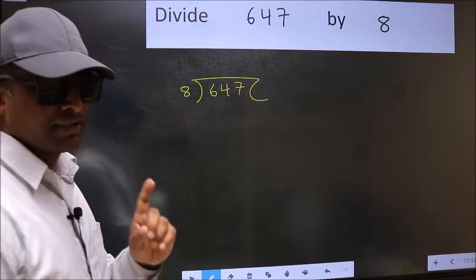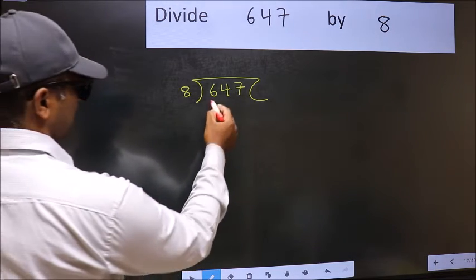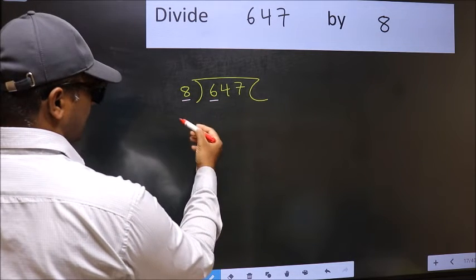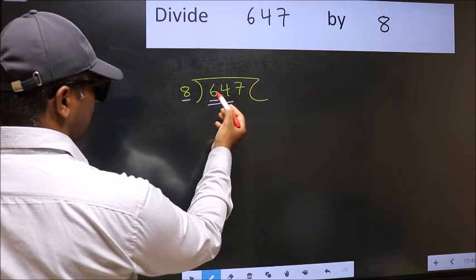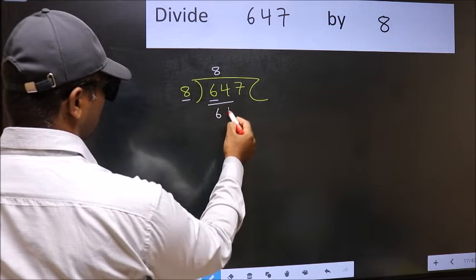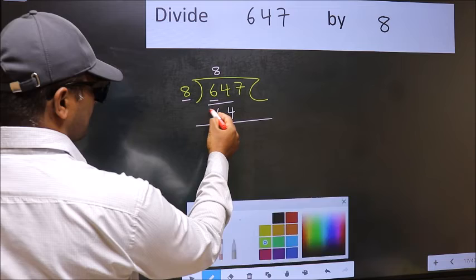Next, here we have 6 and here 8. 6 is smaller than 8, so we should take two numbers: 64. When do we get 64 in 8 table? 8 times 8 is 64. Now you should subtract: 64 minus 64, 0.